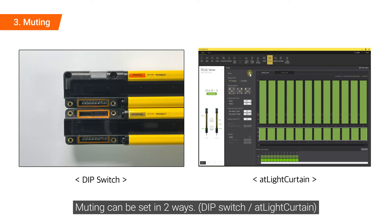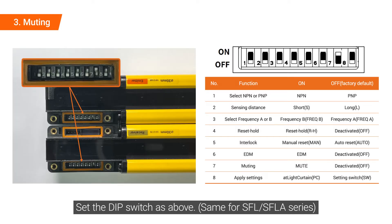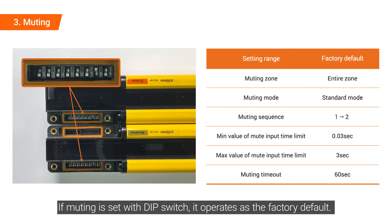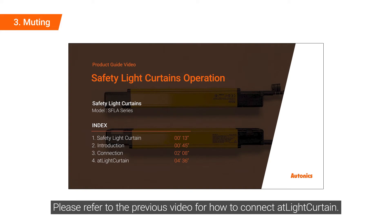Muting can be set in two ways. Set the DIP switch as shown. If muting is set with the DIP switch, it operates as the factory default. Please refer to the previous video for how to connect the light curtain.